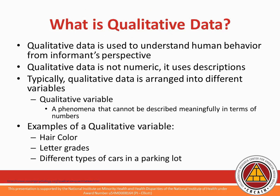So what is qualitative data? Qualitative data is used to understand an informant's perspective on various topics. This data deals with descriptions since it cannot be described meaningfully in terms of numbers. Examples being hair color, demeanor, even the appearance of cars in the parking lot. When you think qualitative, think quality.